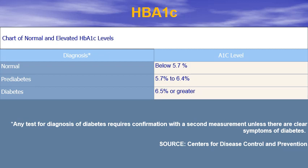To interpret the HbA1c test: normal individuals have below 5.7%, pre-diabetic patients have 5.7 to 6.4%, and diabetics have 6.5% or greater. As this percentage rises above 6.5%, the diabetic patient is poorly controlled. Any test for diagnosis of diabetes requires confirmation with a second measurement unless there are clear signs and symptoms of diabetes.